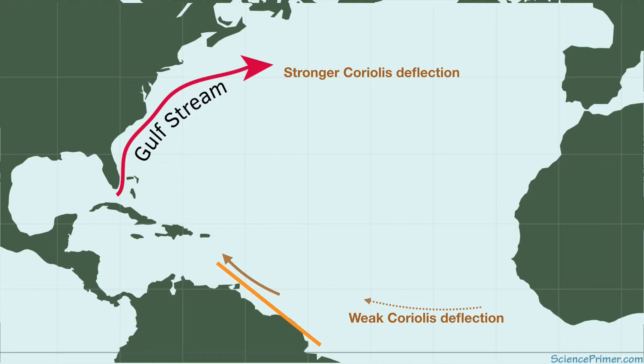As the water travels away from the equator, it experiences greater Coriolis deflection, causing it to turn away from the coast back out into the ocean basin.